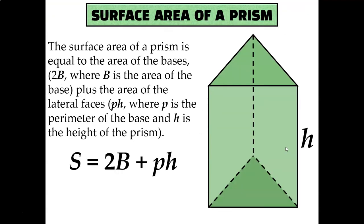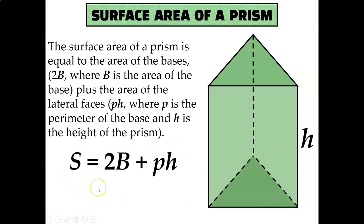For example, if you wanted to calculate the surface area of a prism — like this triangular prism on your screen right now — you have two options. You could find the area of each triangular base and each rectangular face and add up all five of those areas. Or you can use the surface area formula, which breaks down what I just described into one easy-to-use formula.